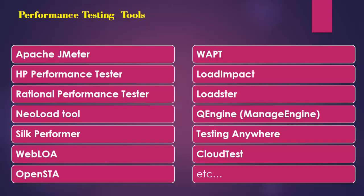Among the popular tools, Apache JMeter, HP Performance Tester, and Rational Performance Tester are well known. Apache JMeter is used to test the performance of web applications. It does not perform all actions supported by a browser, but it is highly portable and supports all Java-based applications.